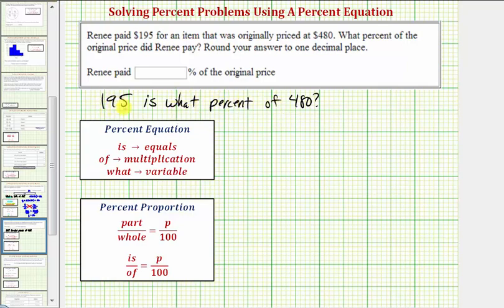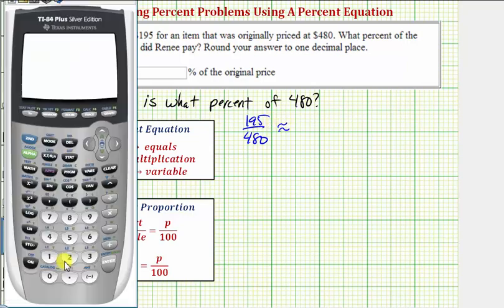So because she paid $195 out of 480, the fraction would be 195 over 480. And now we can convert this to a decimal and then a percentage. Let's do this on the calculator. 195 divided by 480 is equal to this decimal. To convert the decimal to a percentage, we multiply by 100 and add a percent sign. So times 100, enter, to one decimal place, this would be approximately 40.6%.